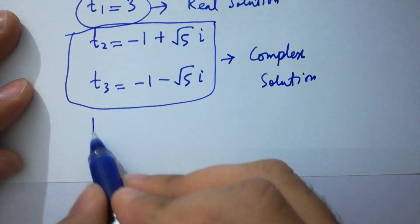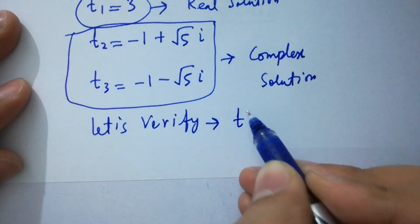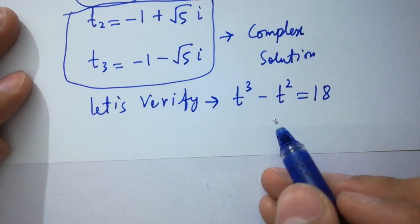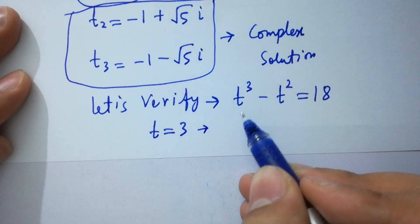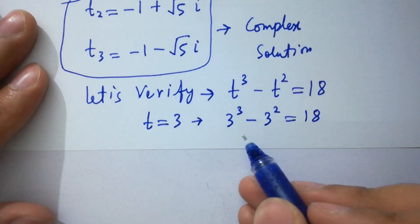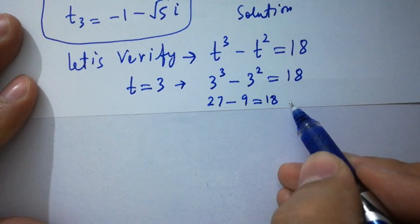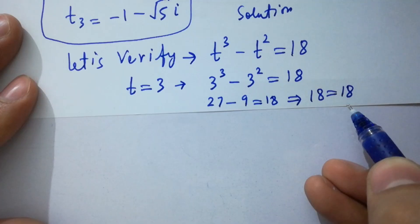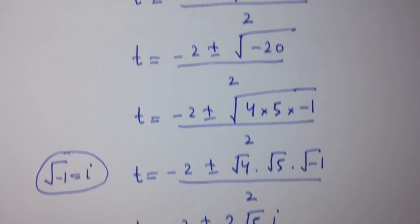Now let's verify. Putting t equal to 3 in t cube minus t square equal to 18: 3 cube minus 3 square equals 18, where 3 cube is 27 minus 3 square which is 9, equals 18. 27 minus 9 is 18, equal to 18. Left hand side equal to right hand side.